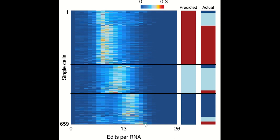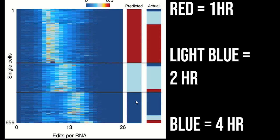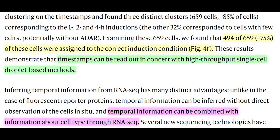Red being one hour, light blue being two hours, and dark blue being four hours. And so as you can see in this plot, by four hours, the single cells have accumulated more edits per RNA. And the remarkable thing is that around 75% of their predictions matched the actual data recorded. And so from this, they demonstrate that the timestamps can be read out in concert with high throughput single-cell RNA sequencing measurements.